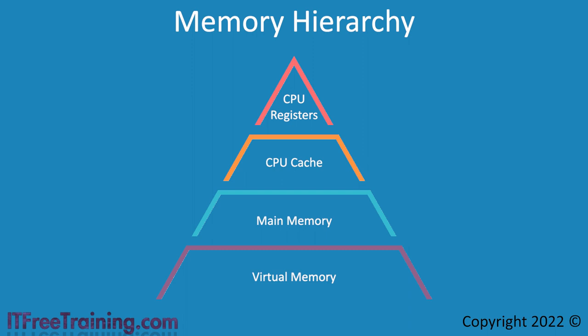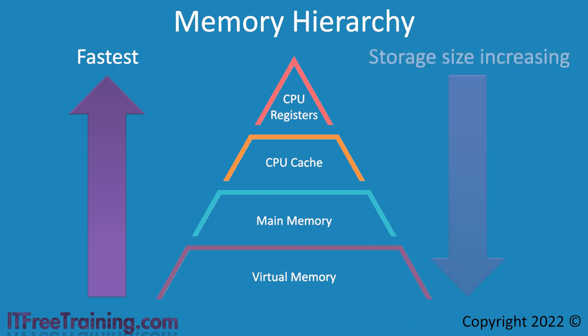So what does all this mean? Essentially, the top of the pyramid is the fastest, and as you go down the speed decreases. The advantage, however, is that it becomes cheaper and thus generally there is more of it. It comes down to a trade-off between cost and performance.